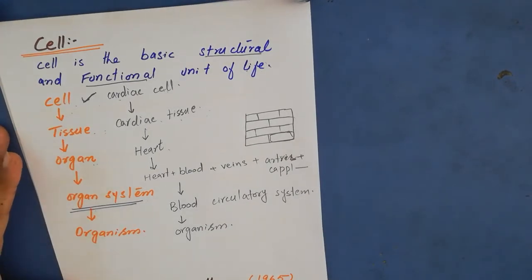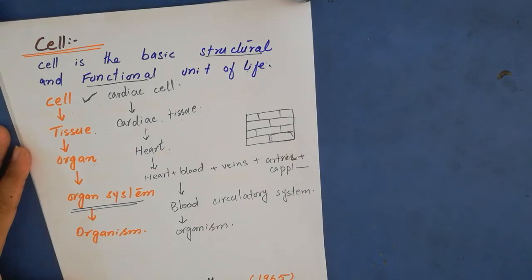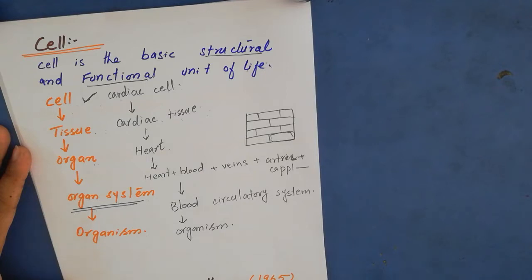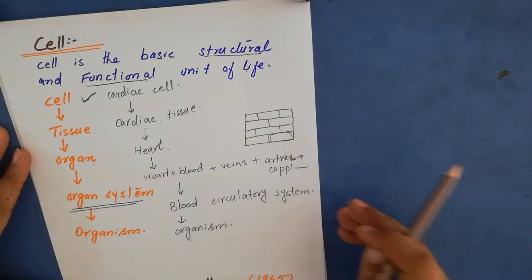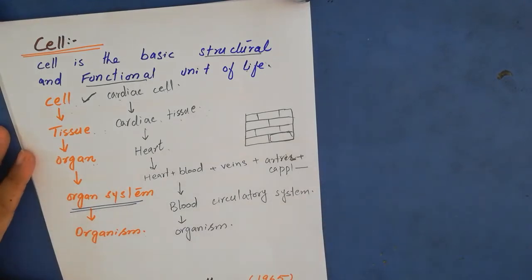Now let's come to the discovery of the cell. The cell was discovered in 1665 by Robert Hooke. Robert Hooke was the scientist who discovered the cell. He observed a slice of cork under a compound microscope.